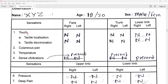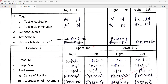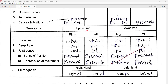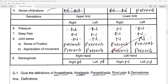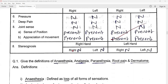For example, in the sensations section: first, touch — tactile localization and tactile discrimination on the face, on the trunk, on the lower limb — which will be normal in healthy volunteers. Cutaneous pain, temperature, and sense of vibrations will all be present and normal in healthy individuals. Sensations in the upper limb and lower limb, on the right and left side, regarding pressure, deep pain, joint sense, sense of position, and appreciation of movement — all will be alright on right and left sides. Stereognosis, right side and left side — normal, right hand and left hand.